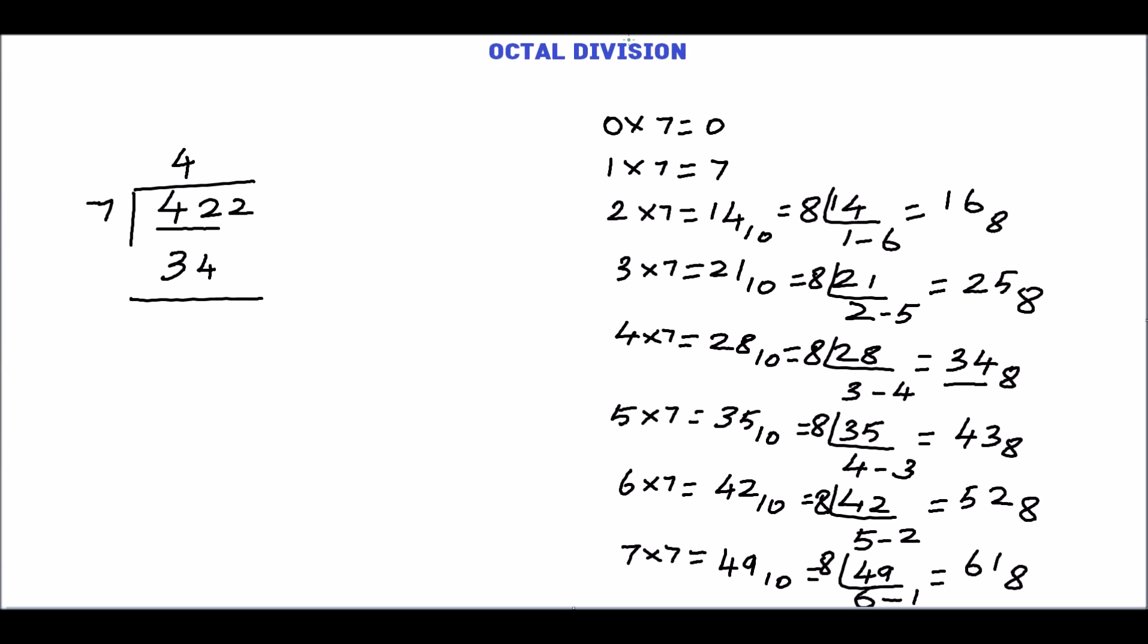2 minus 4. 2 is smaller than 4, so take borrow from this. In octal the borrow is 8. 4 has given the borrow, so the 4 becomes 3. So 8 plus 2, 10. 10 minus 4, 6. Bring down the 2.